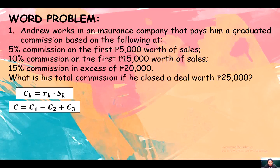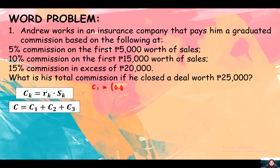From the 25,000 close deal, he surpassed the 5% commission threshold, the 10% commission threshold, and also the 15% commission threshold. The 15% commission applies because it exceeds 20,000 pesos. So the first thing we are going to do is get the commission in each sales tier. For the first 5,000, commission 1 is 5%, that is 0.05 times 5,000.